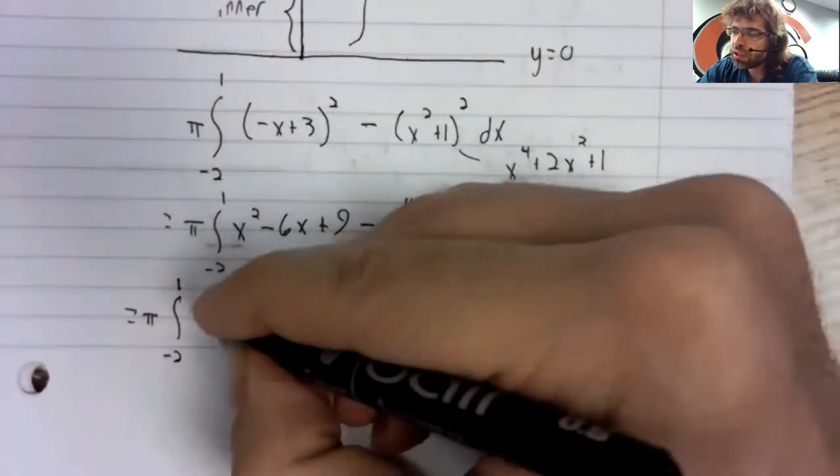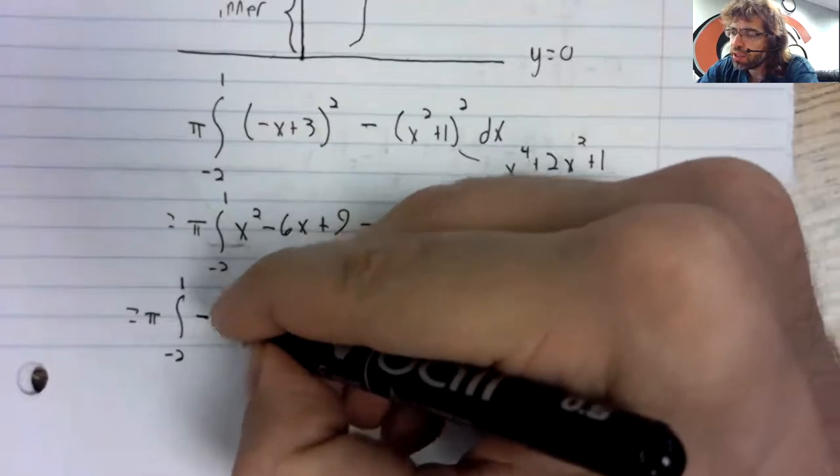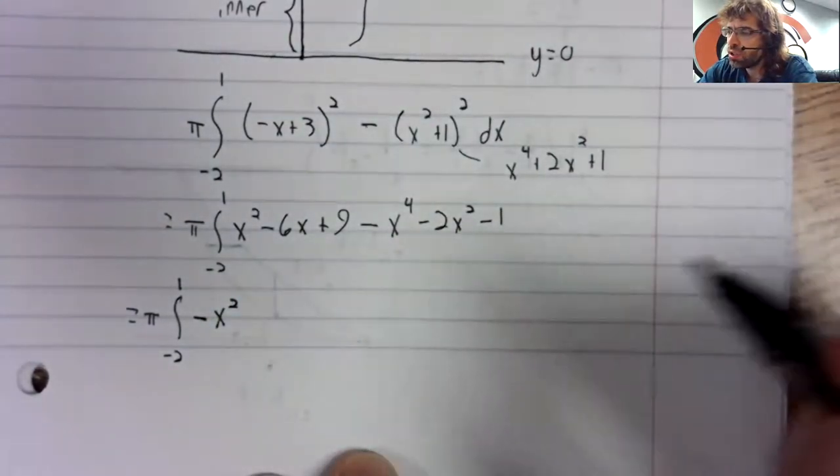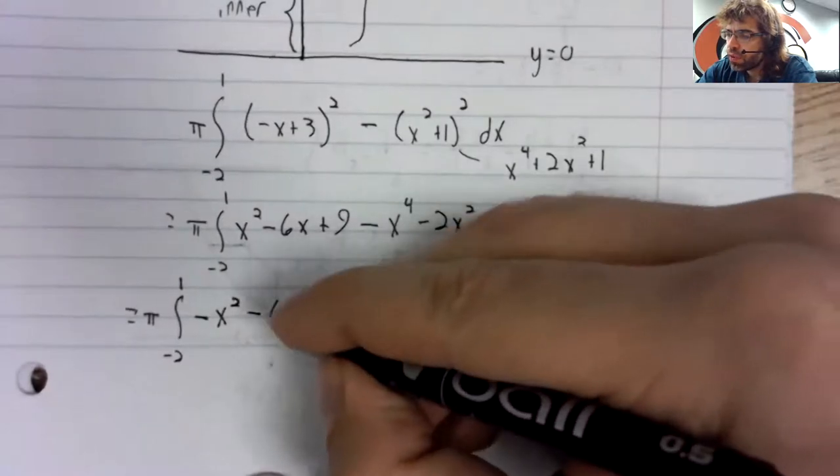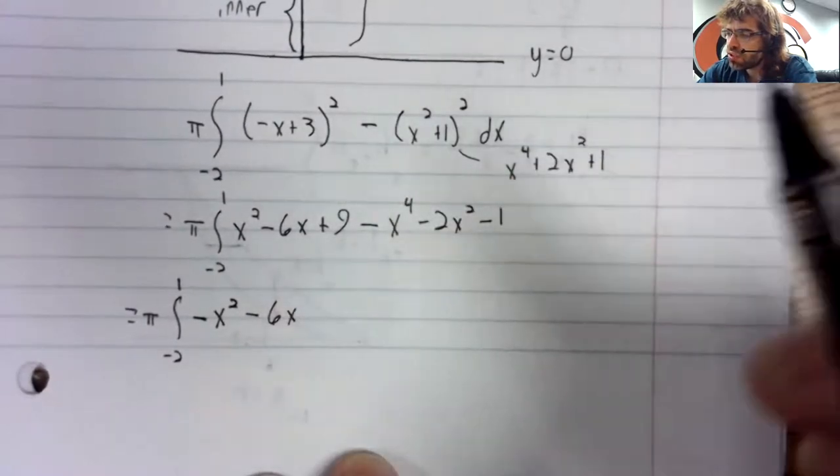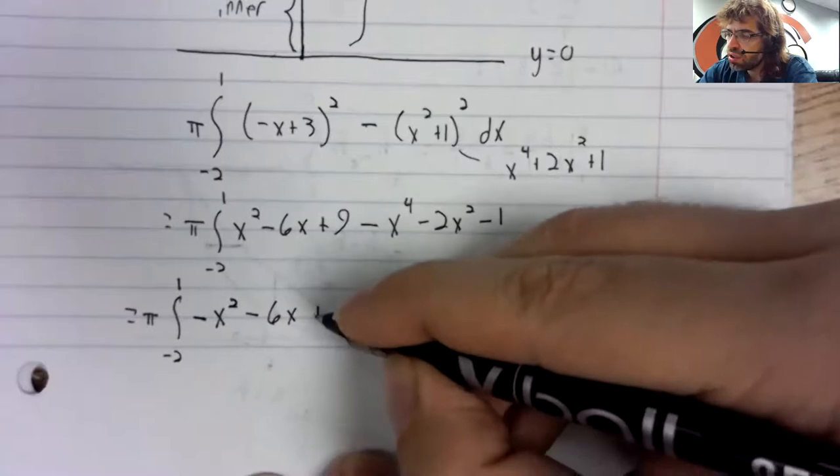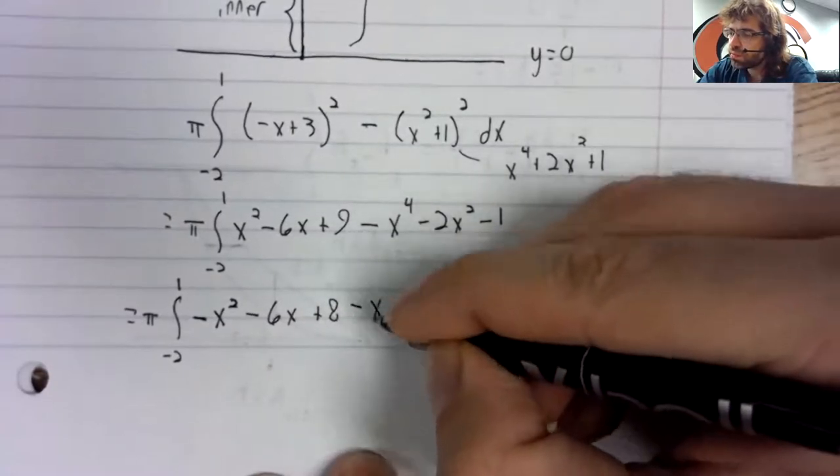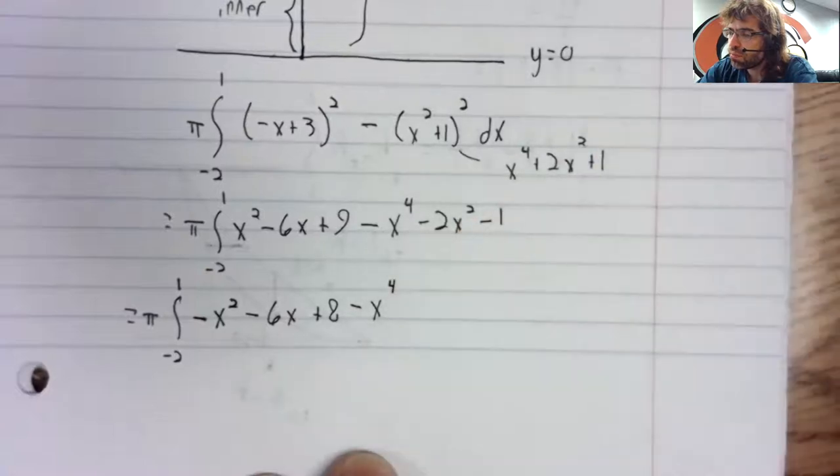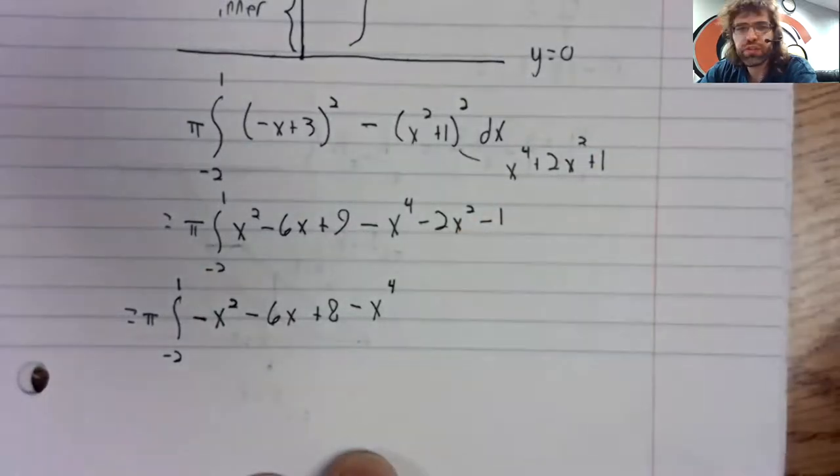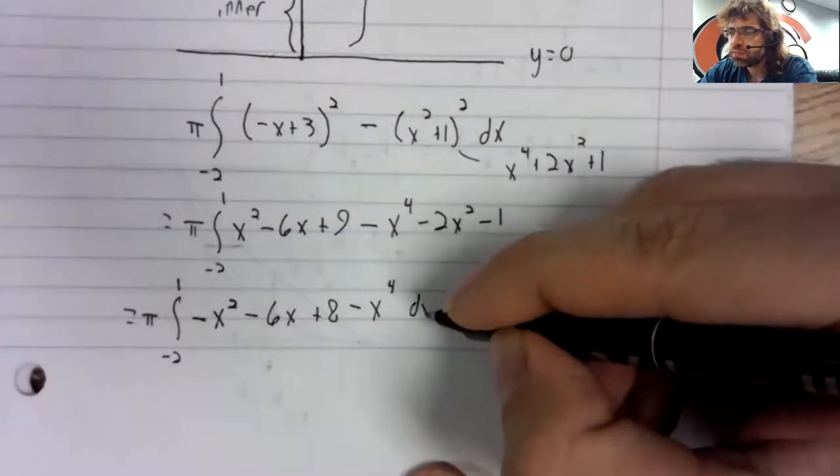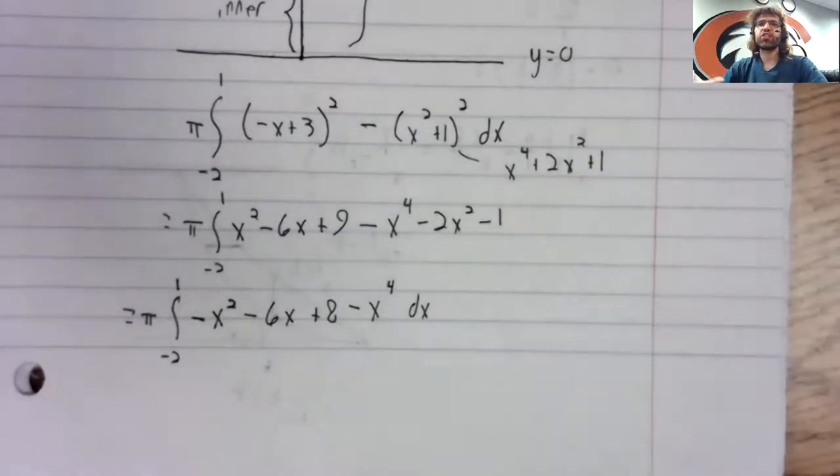Minus six x plus three. So nothing is square, minus x to the fourth. And then you can finish this up.